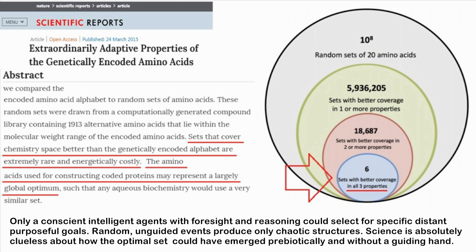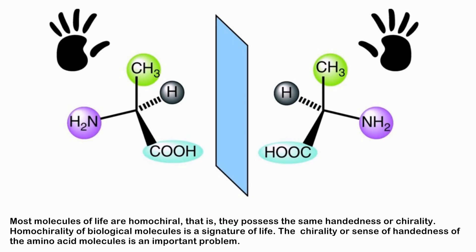The problem of homochirality: most molecules of life are homochiral — they possess the same handedness or chirality. Homochirality of biological molecules is a signature of life. The chirality, or sense of handedness, of the amino acid molecules is an important problem.